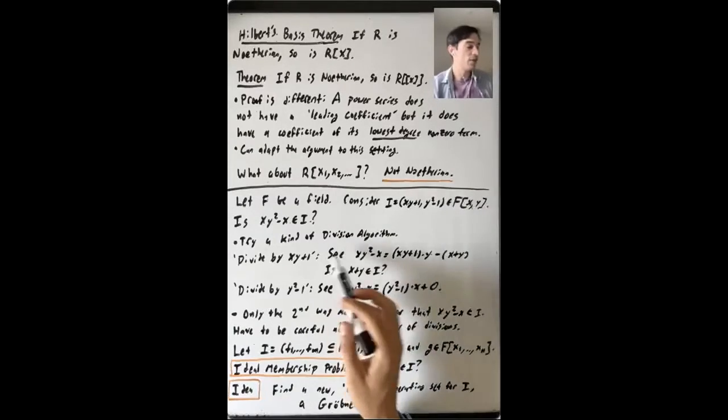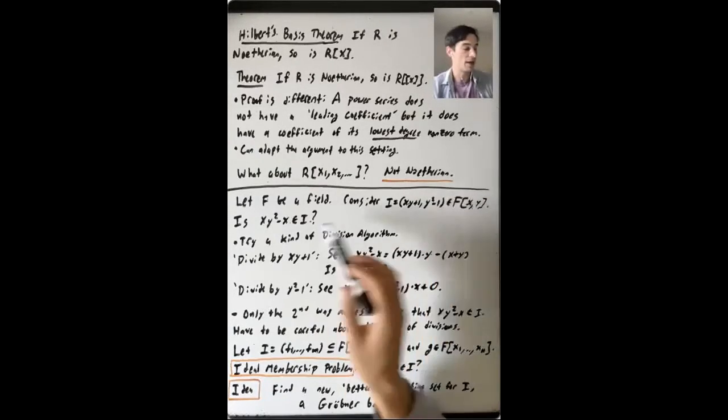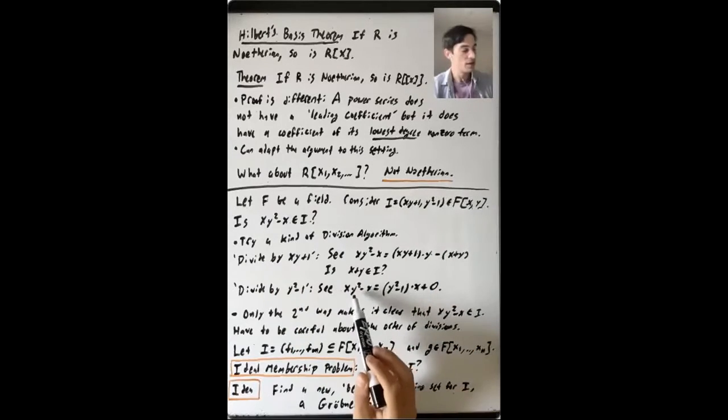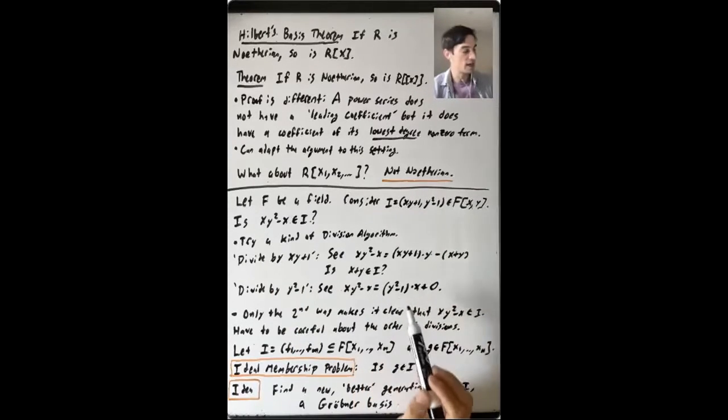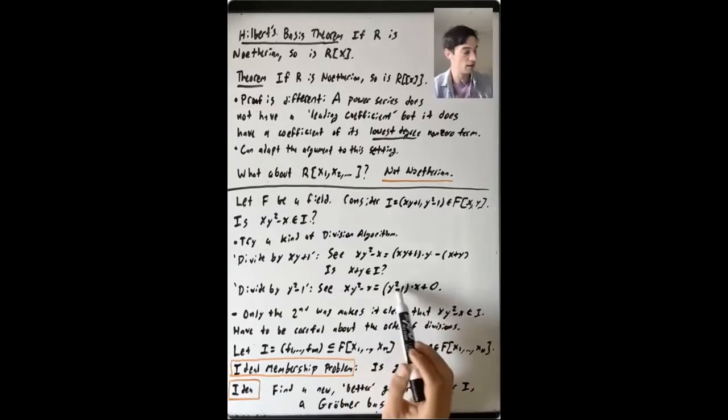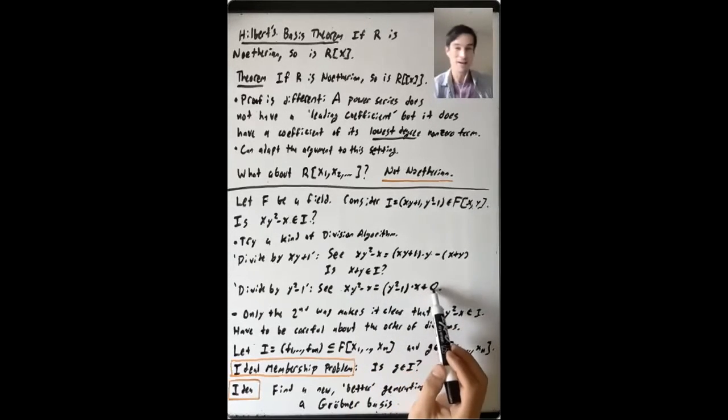Okay, well, what if you did it in the other order, and you said, okay, I'm going to try to write X, Y squared minus X as Y squared minus one times something, you see that X, Y squared minus X is Y squared minus one times X, because you want the X, Y squared to cancel out, and then we get kind of lucky, plus zero.